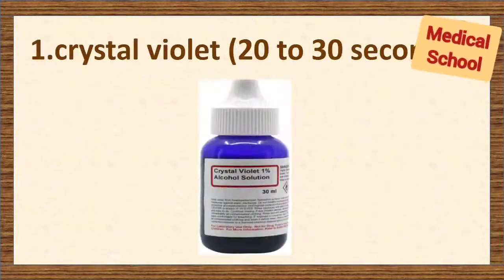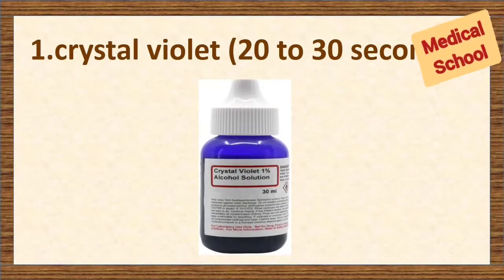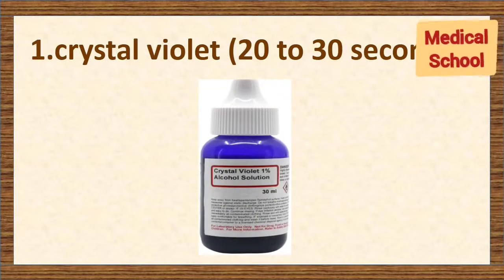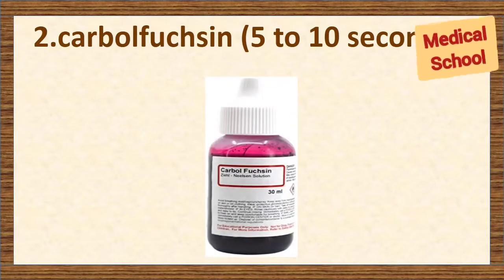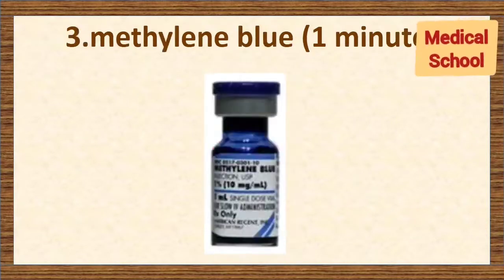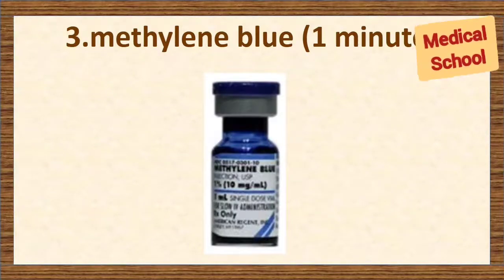Basic dyes such as crystal violet — staining time is 20 to 30 seconds. Carbol fuchsin — staining time 5 to 10 seconds. Methylene blue — 1 minute staining time.